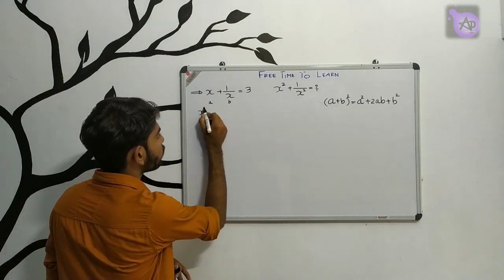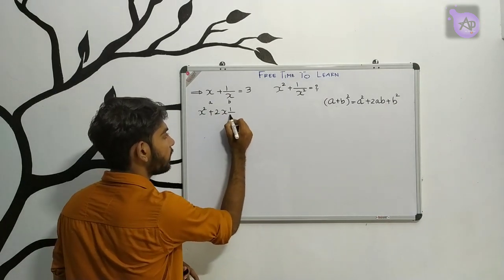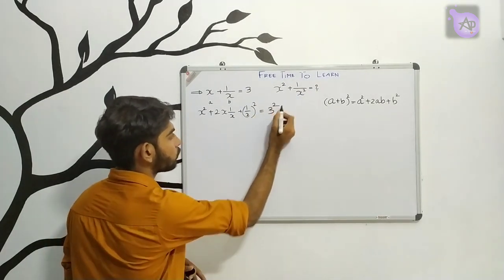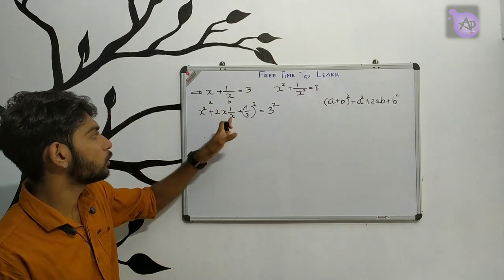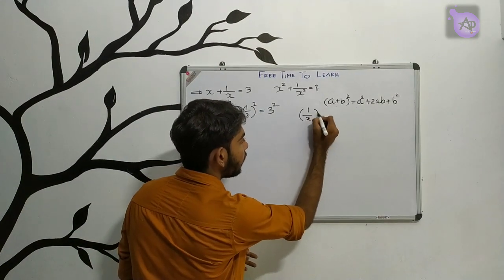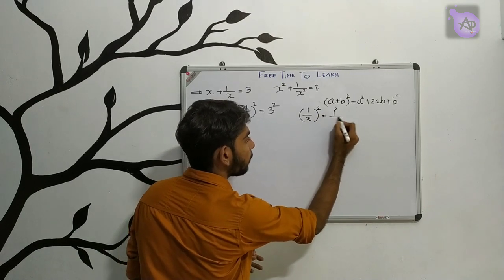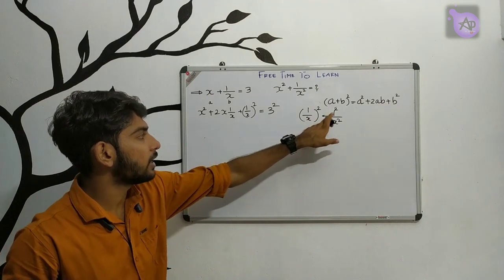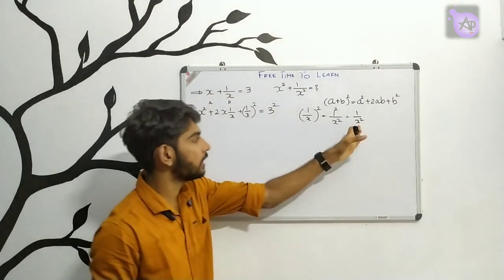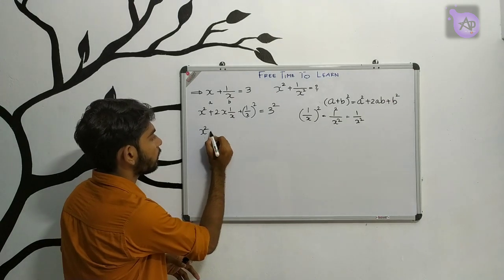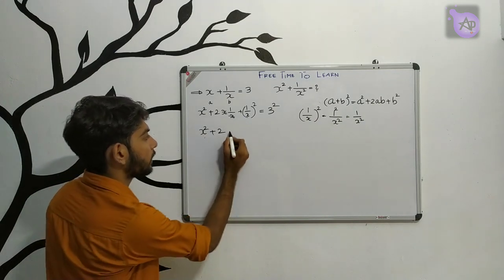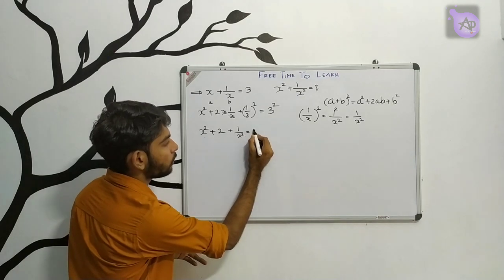Expanding: x squared plus 2 into x into 1 by x plus 1 by x the whole square equals 3 squared. We can simplify 1 by x the whole square as 1 by x squared. So x squared plus 2 plus 1 by x squared equals 9.